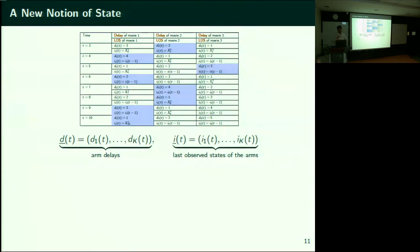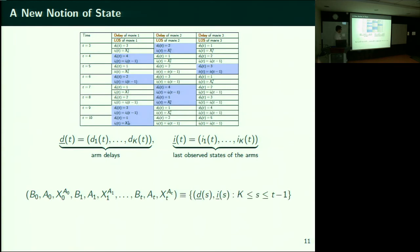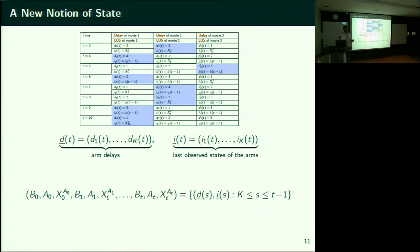Giving this full information is equivalent to giving delays and last observed states up to some time. At t=0,1,...,k−1 I sample the arms in order 1,2,...,k. At time t=k onwards I start computing the delay. This delay and last observed state doesn't make sense until you have seen each movie once — you cannot associate the last observed state if you haven't observed that movie. So I stand at time t=k and start computing from that time onwards.